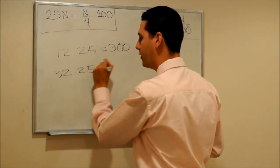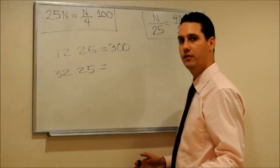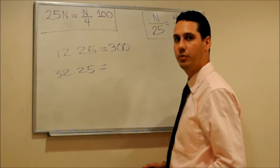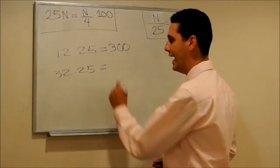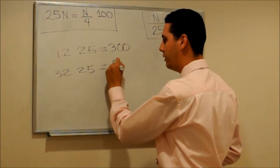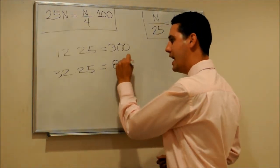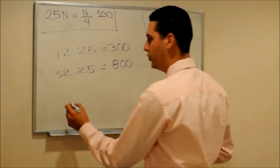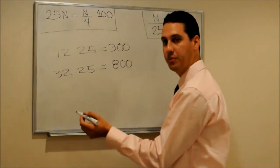Let's do another example: 32 times 25. It's simple. Let's divide 32 by 4 — that's 8. So the answer would be 800.